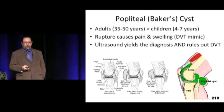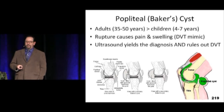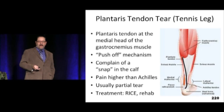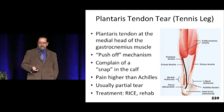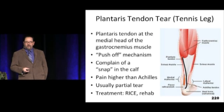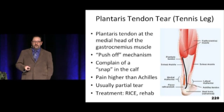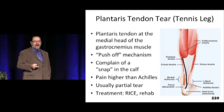A popliteal or Baker cyst is one of the causes of swelling behind the knee. Sometimes these cysts rupture and they'll have a bruise running down the back of the calf that can look just like a DVT. The good news is ultrasound is used for diagnosing both a Baker cyst and a DVT, so ask the ultrasonographer to look for both. Tennis leg — a plantaris tendon tear, usually of the medial portion of the gastrocnemius, from a push-off mechanism or stumbling downstairs — can also be diagnosed with ultrasound. Because the soleus and other head of the gastroc are intact, the Thompson's squeeze test will give a normal plantar response. Treatment is RICE and rehab.